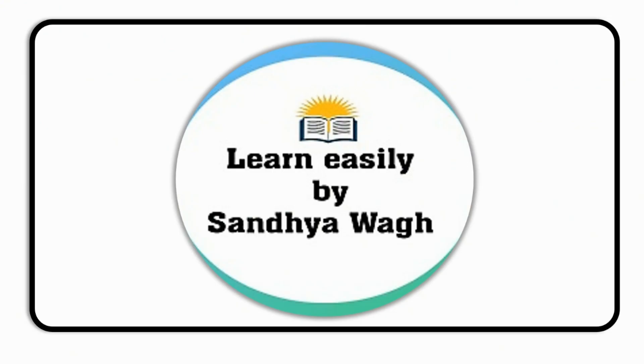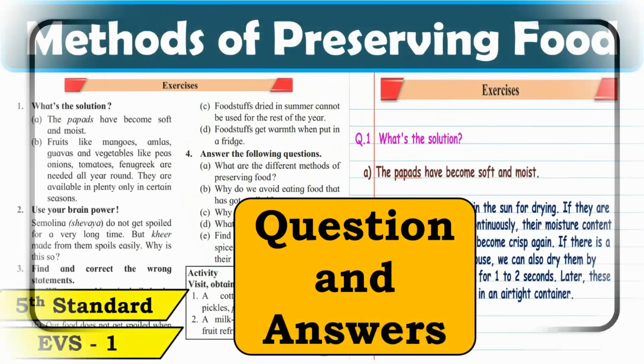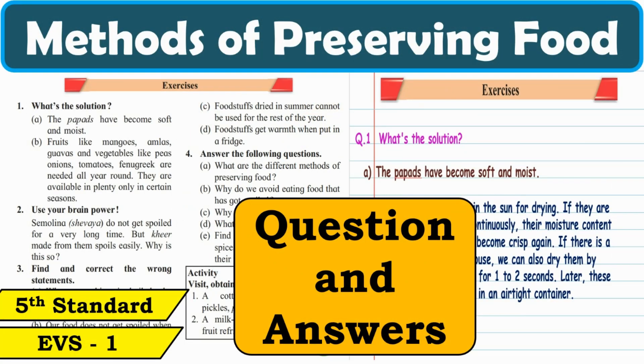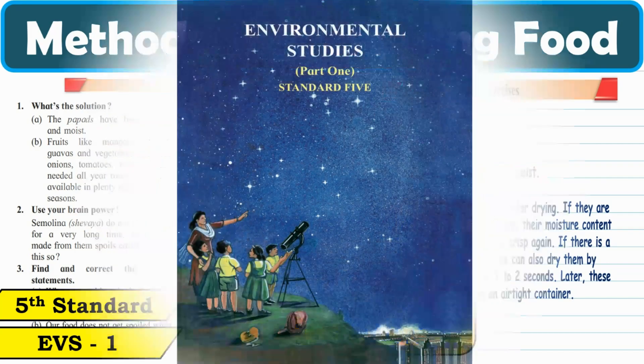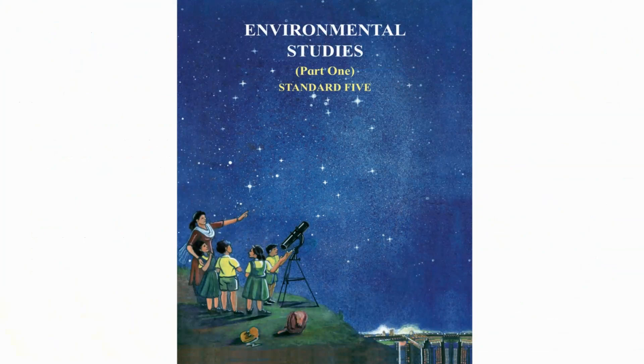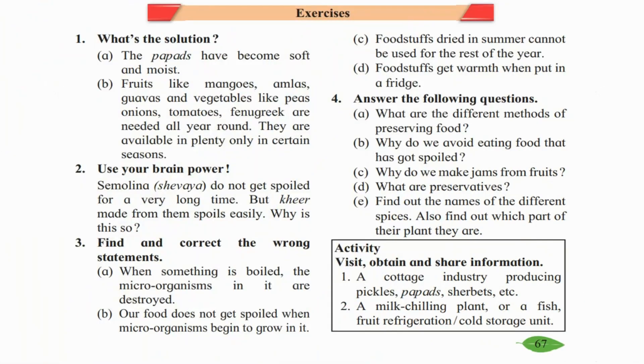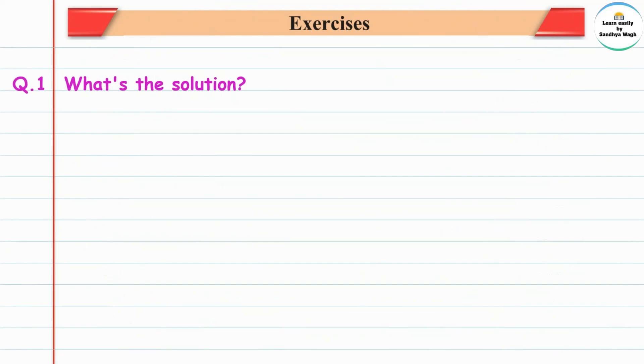Hello dear students, today we are going to learn and understand the question and answers of lesson number 13, Methods of Preserving Food, from Environmental Studies textbook part one, standard five, page number 67. In the textbook, there are exercises with questions. We'll discuss the answers to these questions in this video.